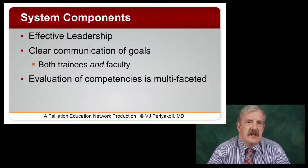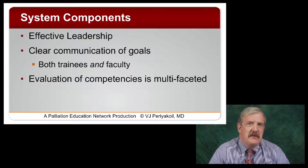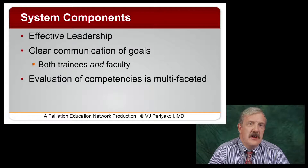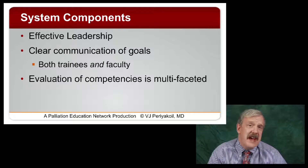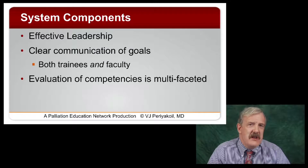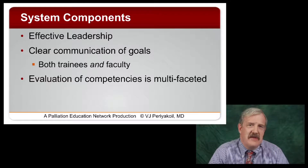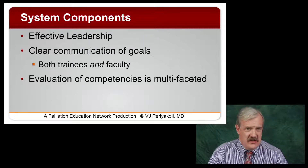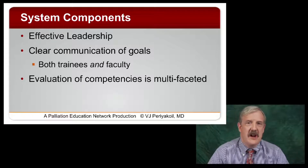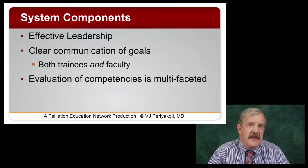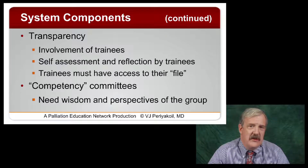What are some of the system components? Just like any system, you need effective leadership. Program directors, clerkship directors, and faculty have to be leaders in making sure assessment occurs and is done well. We need to clearly communicate goals to both trainees and faculty — milestones and entrustable professional activities can be very helpful in ensuring shared understanding. Evaluation of competency is multifaceted; no single tool will be sufficient to say that a trainee is truly competent across all six competencies. Transparency is also important, and self-assessment and reflection by trainees is a vital part of the process.